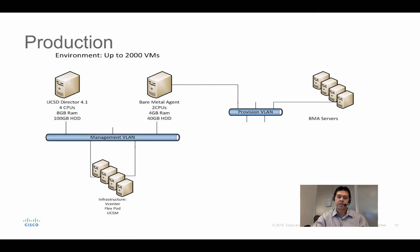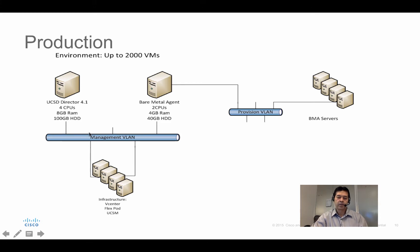For deployment scenarios — a simple deployment might be 2,000 VMs, a small environment maybe 5,000. This is kind of an old slide from 4.1; I think the latest is 6.0, with 6.5 on the horizon. The documentation clearly states how much CPU, RAM, and disk you need — pay attention to that. It's also recommended that you put a reservation on the VM so it doesn't fight with other workloads for resources.